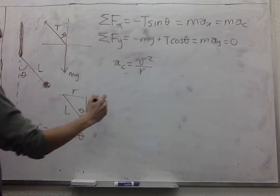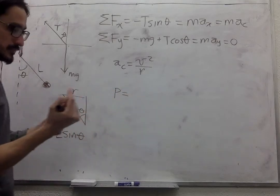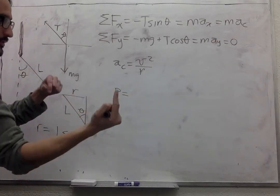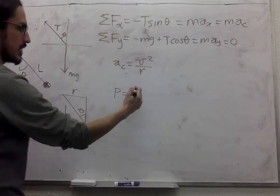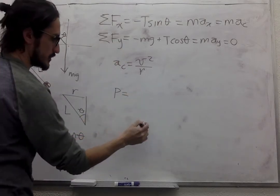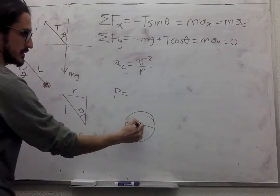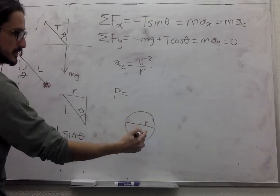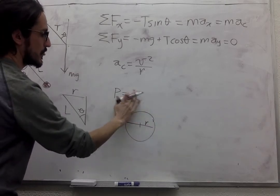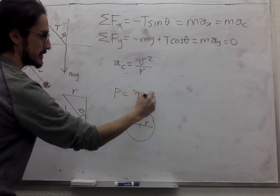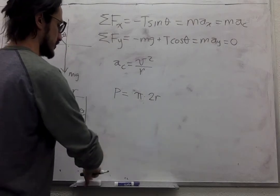And we know the period will be the time that it takes the ball to go around once. So if you have a circle, this is the diameter, this is the radius. Then the circumference is pi times 2 times the radius.